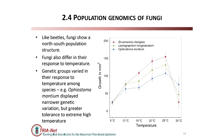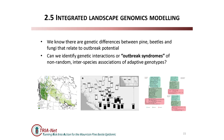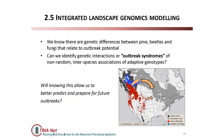Finally, we're trying to do some work integrating these three things together, which is obviously complex because each element is complex on its own. We know there are differences between pine, beetle, and fungi, and we know these may relate to outbreak potential. Can we pull that together and look for syndromes - are there genetic similarities or co-similarities between these groups linked to outbreak potential? This is work being led by Patrick James. Will knowing this allow us to better predict and prepare for future outbreaks? That's an open question but obviously something we're interested in knowing.